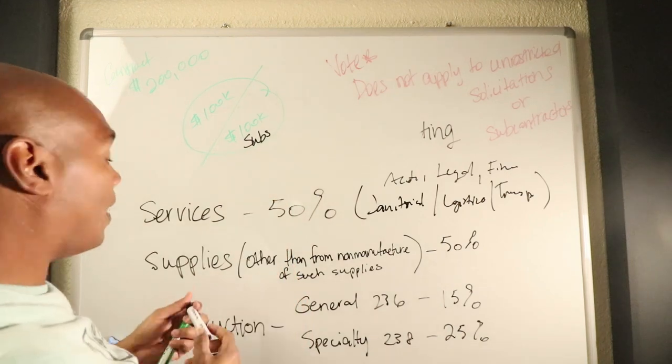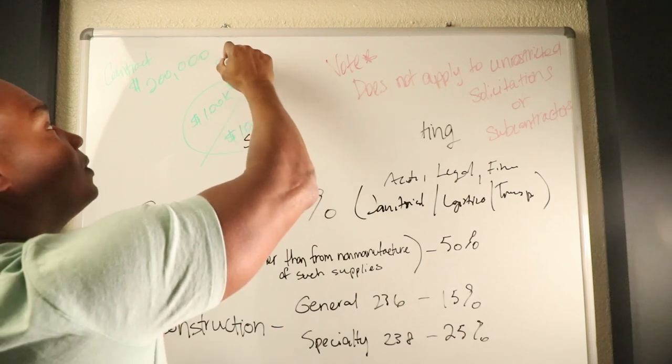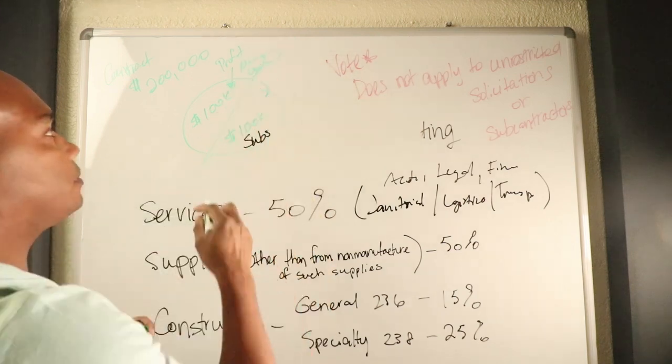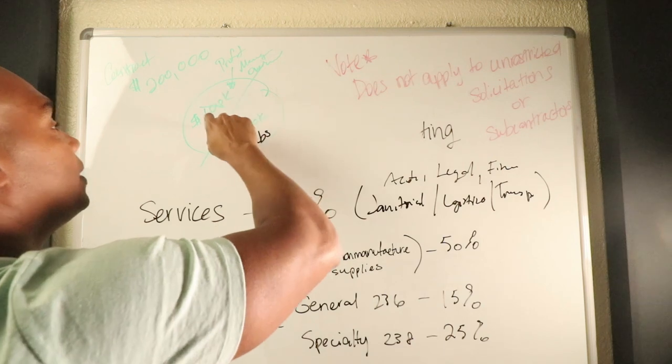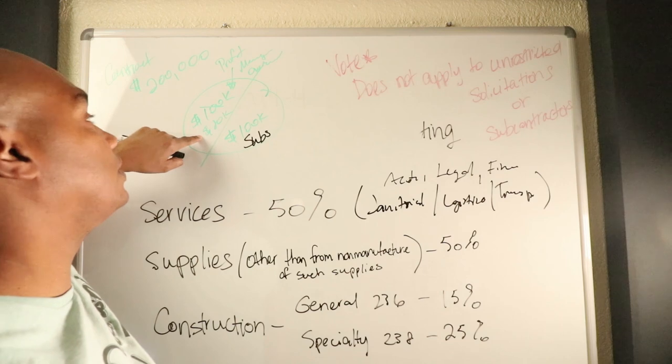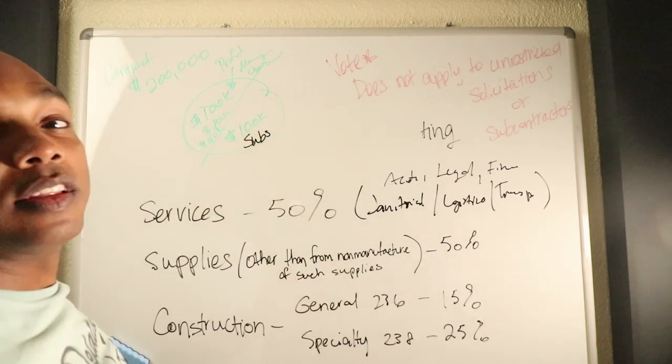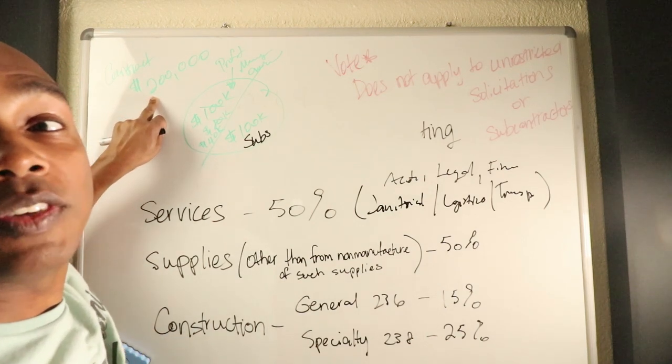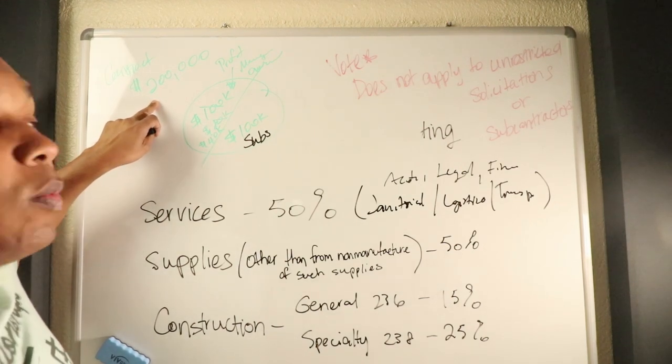If you get a contract for $200,000 janitorial, you cannot award more than $100,000 to subs. Now in your $100,000 up here can be your profit, management, overhead. In your $100,000 can be your profit. If you got 20% profit, that takes you to $80,000 of actual work that you've got to do. If you take out your management costs, maybe it's $40,000 worth of work.